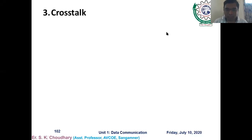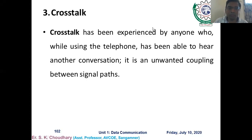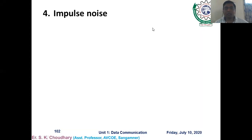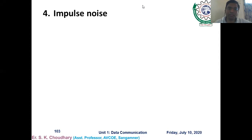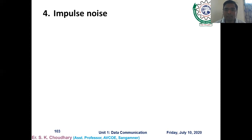Welcome. In yesterday's lecture we discussed transmission impairments — attenuation, noise, and distortion. Under noise, we covered various kinds including thermal noise, inter-modulation noise, crosstalk, and the last one was impulse noise, which was remaining.